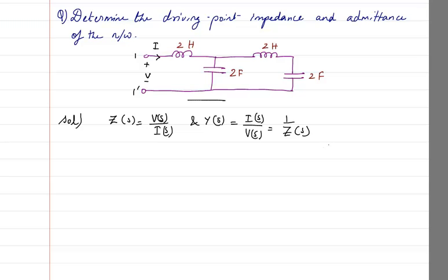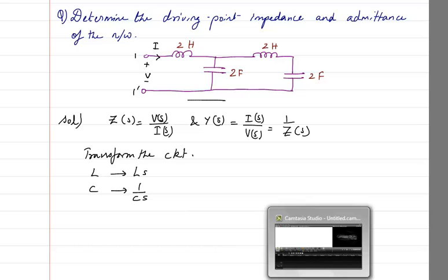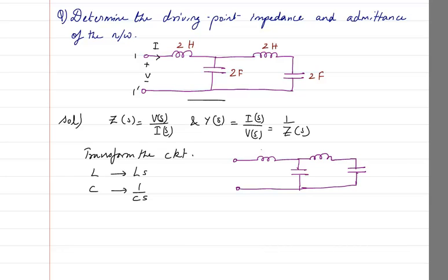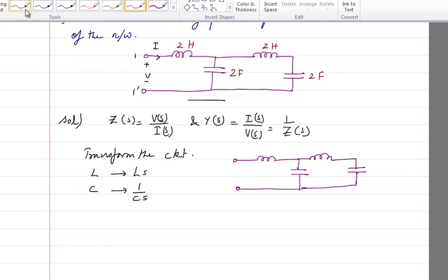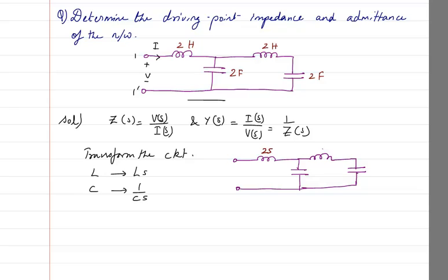So if I find out Z(s), I can find out Y(s). Now as you can see, it is all in Laplace, so first we have to transform the circuit by taking L as Ls and C as 1 by Cs. Based on that, if I draw this transformed circuit, the inductor value is written as 2s. This inductor is also 2s, and the capacitance is written as 1 by Cs, where C is basically 2 farads. So it is 1 by 2s, and this one also is 1 by 2s.